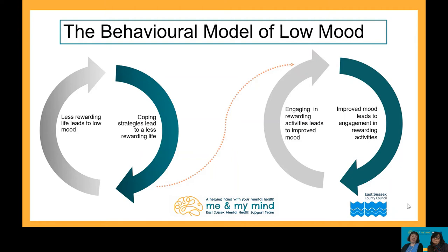It's important to build activities which provide a sense of achievement, so scheduling things like running the hoover around, doing the washing up, or visiting grandparents can all help to boost mood. Look at things they used to do but have stopped doing. The aim is to help your child start breaking their cycle of low mood and introduce a new cycle where improved mood encourages them to do more, bringing enjoyment, achievement, and increased well-being.